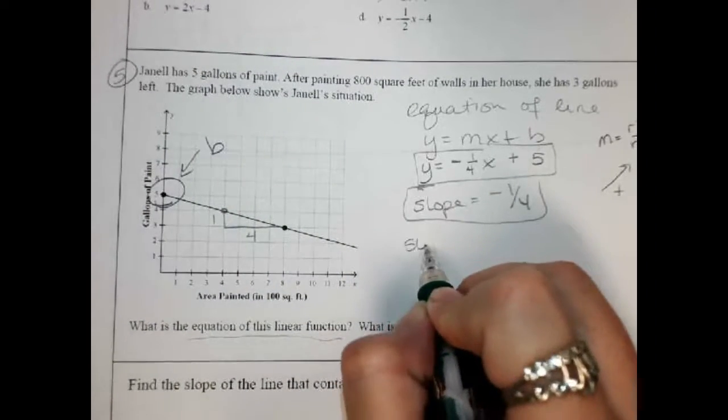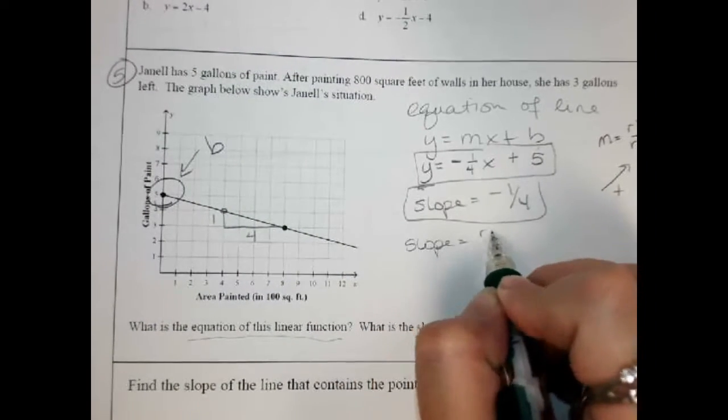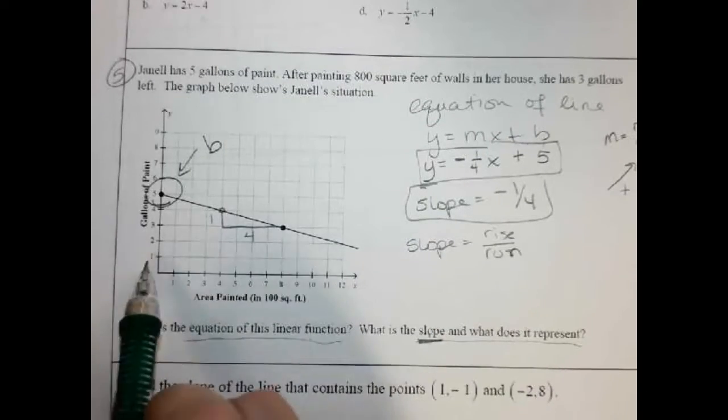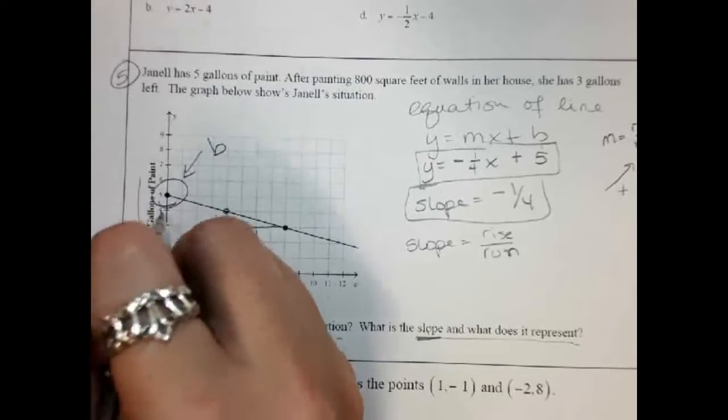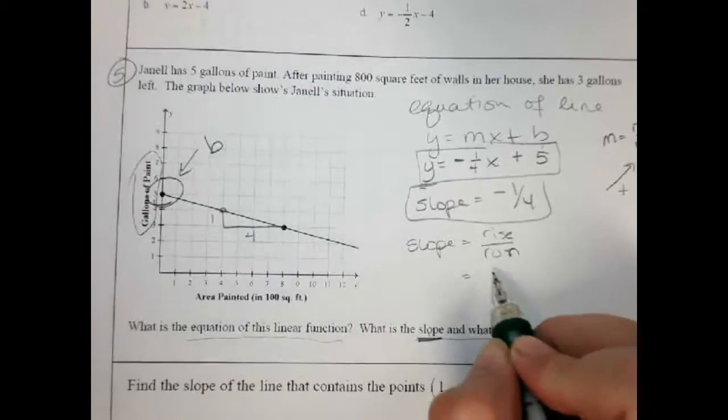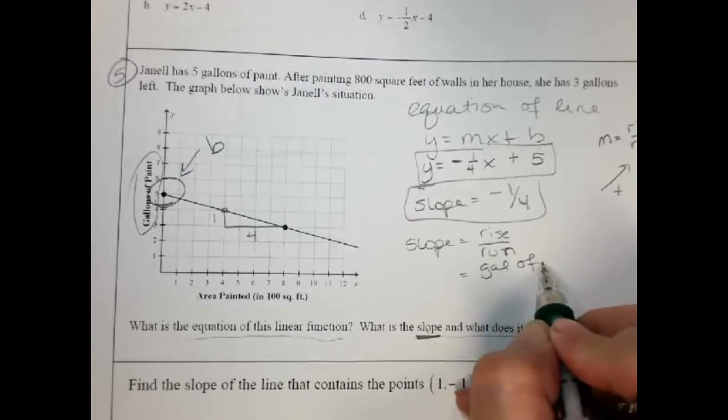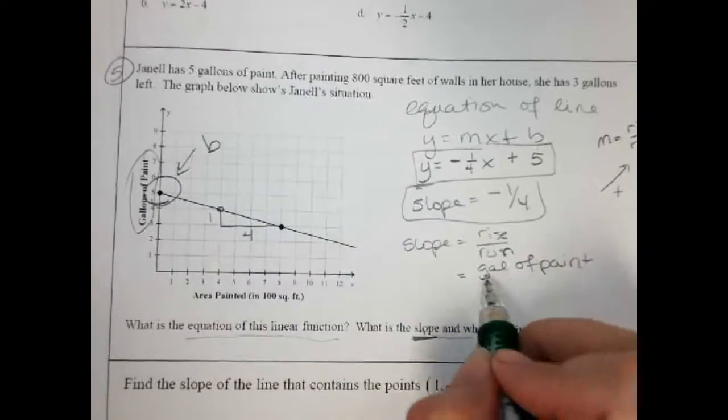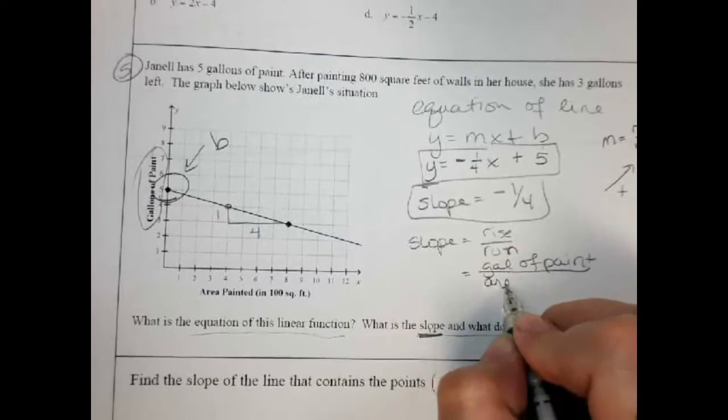Remember that slope is rise over run. This is actually really easy. Rise is going this way. That's the gallons of paint. That's the rise. Gallons of paint right there. Run is this part right here. Area painted.